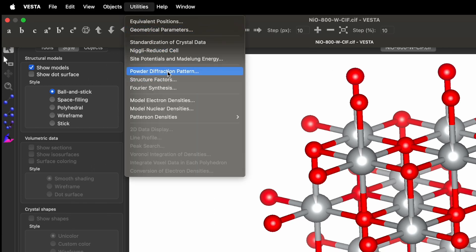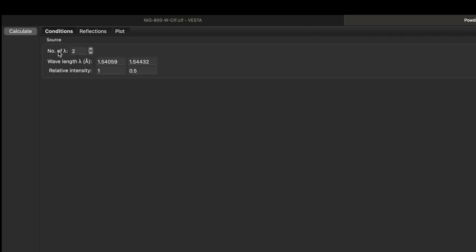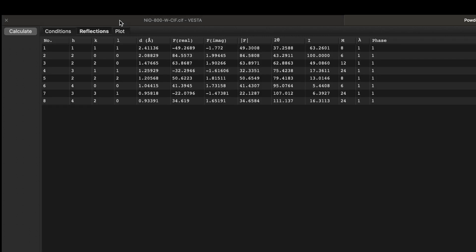Go to the utility. In the utility you will find the option for powder diffraction pattern. Click over here. It will take you to a new window. If you click on the condition, you will see the number of wavelengths is 2. Reduce it to 1. Then you can go to calculate and hit this button.